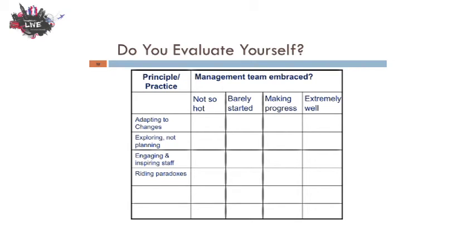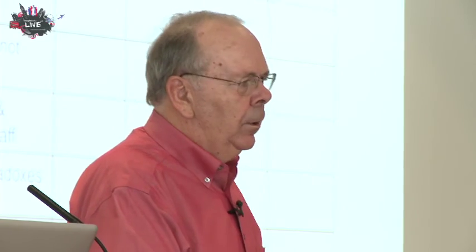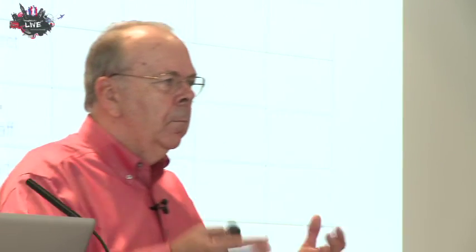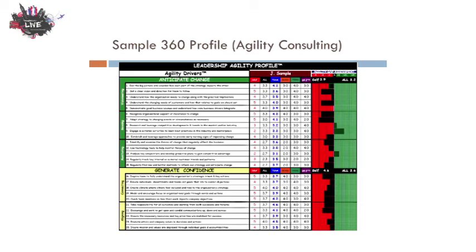Do you evaluate yourself as a management team? Have you evaluated your ability to adapt to change over time, and how adaptable do you think you need to be? How exploratory do you need to be, and how are you doing in those dimensions? Some companies do full 360-type evaluations — this one from a company in the States called Agility Consulting — really a set of questions about behaviors that point to organizations and management that are more agile.